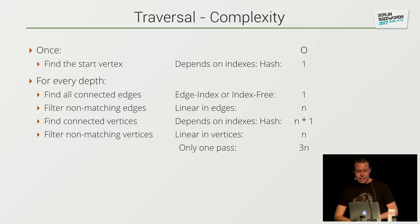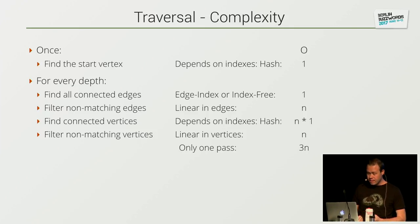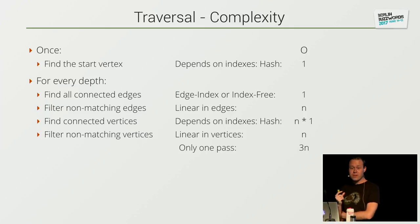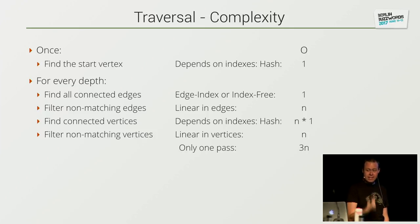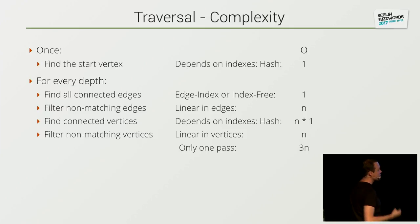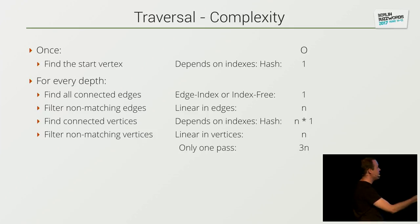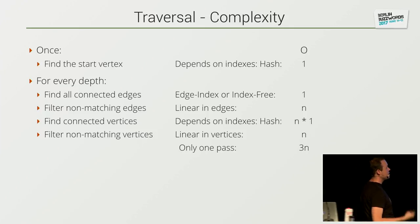What's the complexity of this? First, we have to find the one pinned start vertex — how fast depends on the indexes we can use. Best case, we have a hash index that does constant-time lookup to find the exact document. For every depth, we have to do four steps. First, find all the connected edges from the vertex we already have — done with an edge index or index-free adjacency in constant time. We have to make sure this is constant time because that is the most important operation in a graph database. Then we filter all the non-matching edges — that is linear in the amount of edges, so O(n) complexity. We find the connected vertices on the other side of the edge — again constant time per edge using index or index-free adjacency. And for every edge we have constant time lookup.